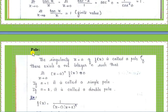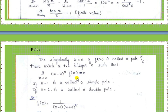The next category is pole, which is very important. The singularity z equal to a of f of z is called a pole if there exists a positive integer n such that limit z tends to a of z minus a whole power n times f of z is not equal to zero — we must get some non-zero value. If n equal to 1 it is called a simple pole; more than 1 is called a double pole, triple pole, and so on.